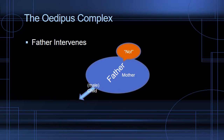What happens is that the father intervenes — symbolically, the father says no. The father separates the male child from the mother, saying the mother is his and the child cannot have her. There is a rivalry between the male child and the father, but ultimately in the successful Oedipal complex, the male child is expelled from this union with the mother, and a new family structure is established.